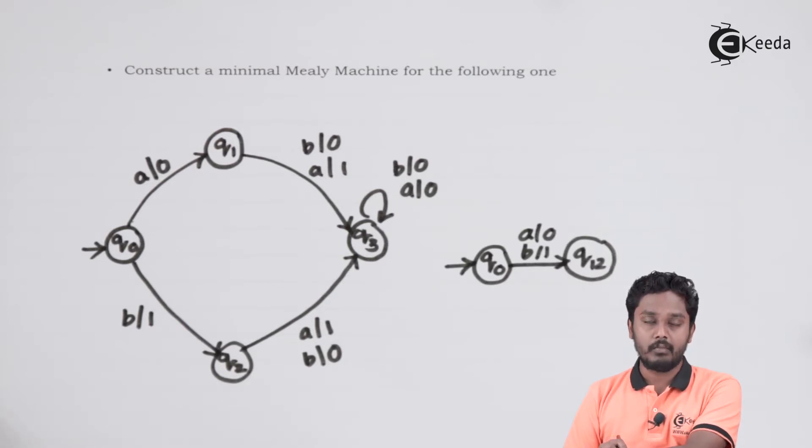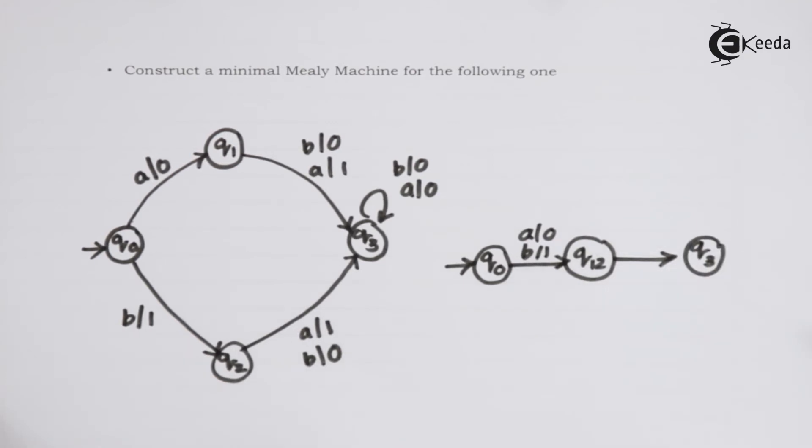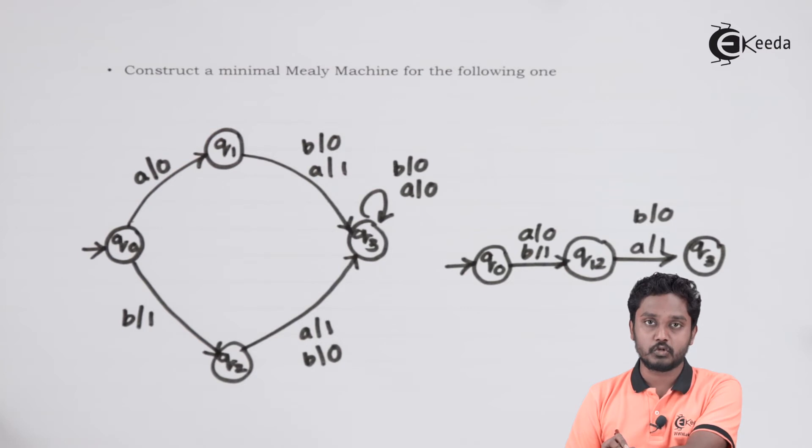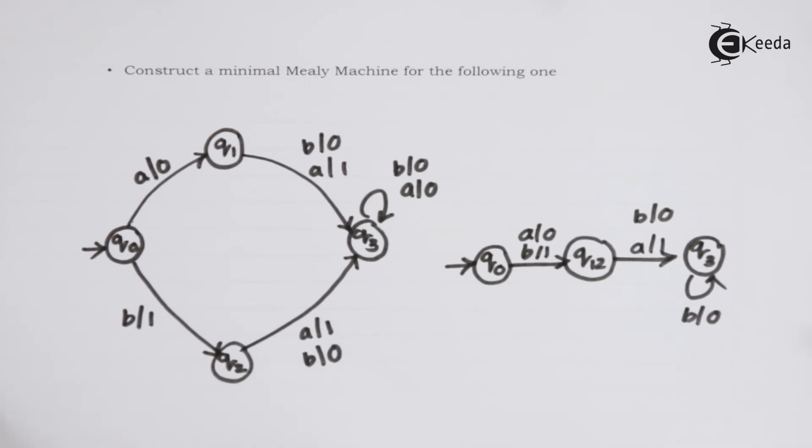Now, rest of the transitions are same, that is from Q1 and Q2. We reintroduce the state Q3, B is replaced with output 0, A is replaced with output 1. Both will have transition to the single state Q3. With this, we have combined the state Q1 and Q2 into a single state Q12. Rest of the transition from Q3 is similar, B with 0 and A with 0.